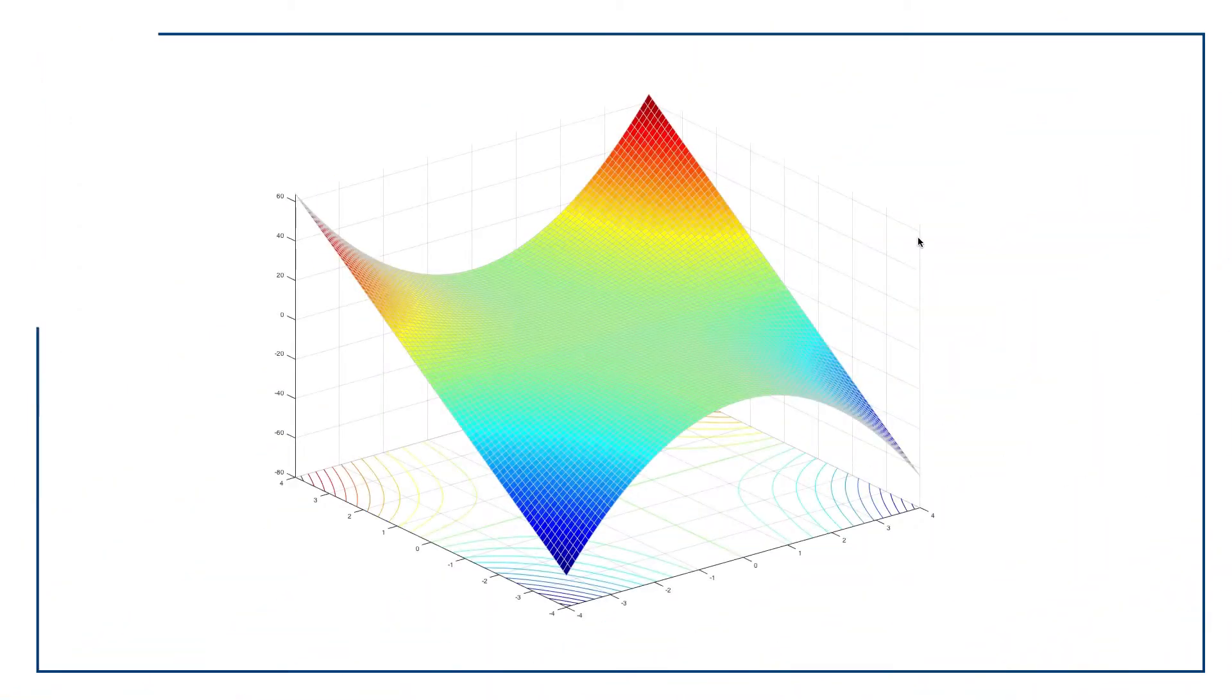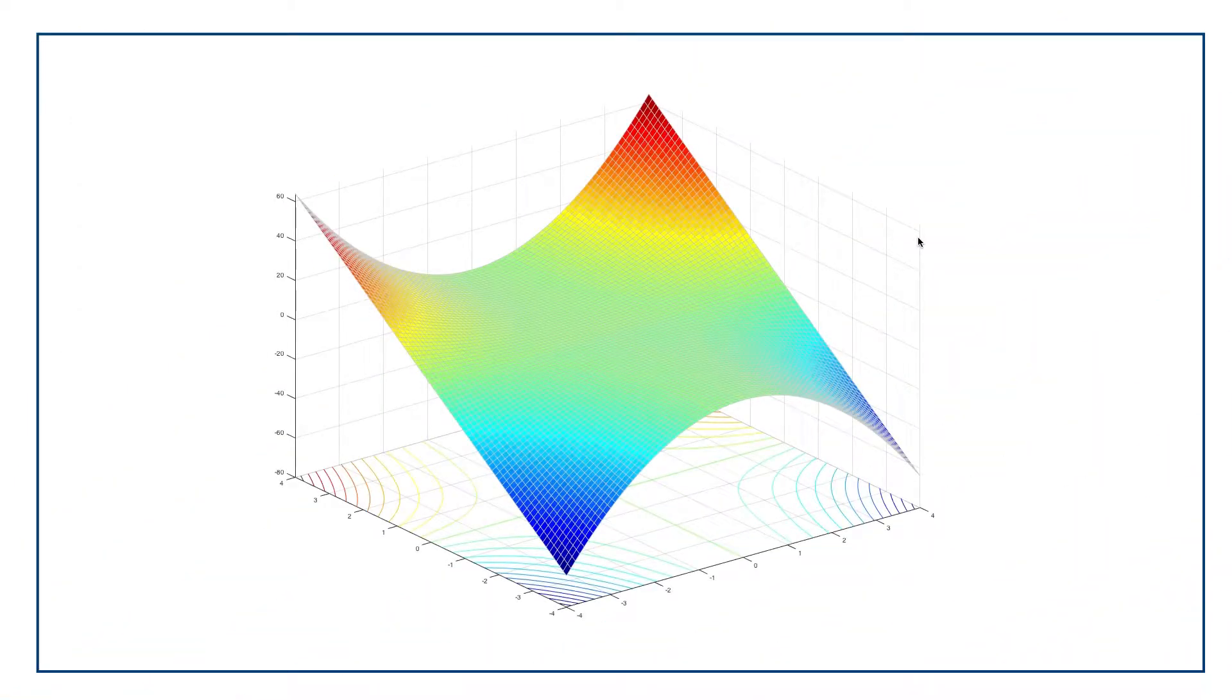Say I've got a function like f equals x squared y here. This function looks like this. And what I've got here is a function that gets big and positive when x is big and y is positive, and it gets negative when y is negative.